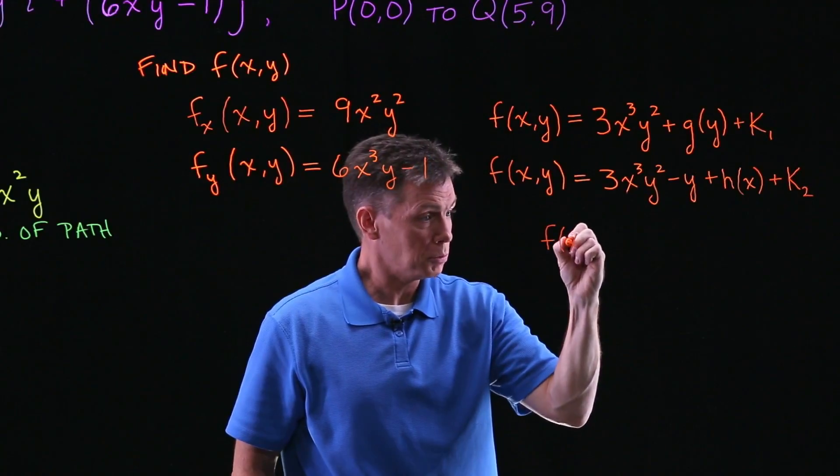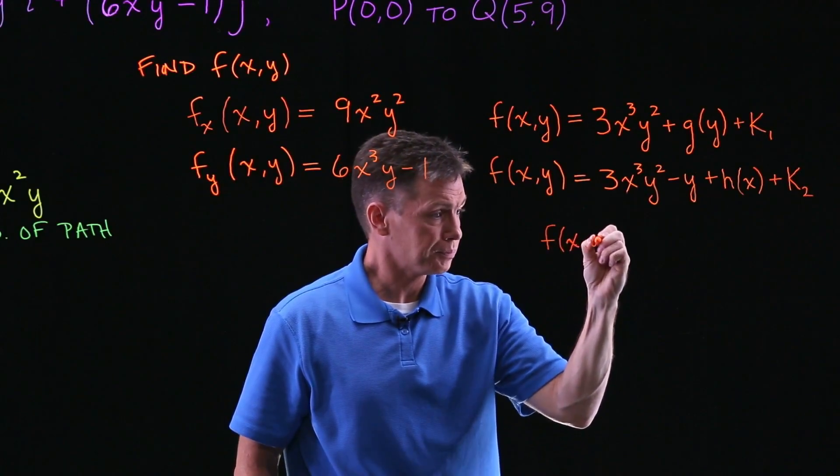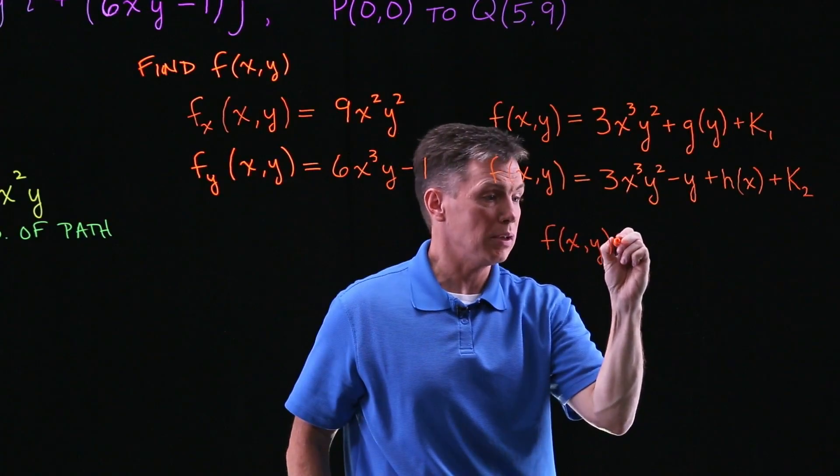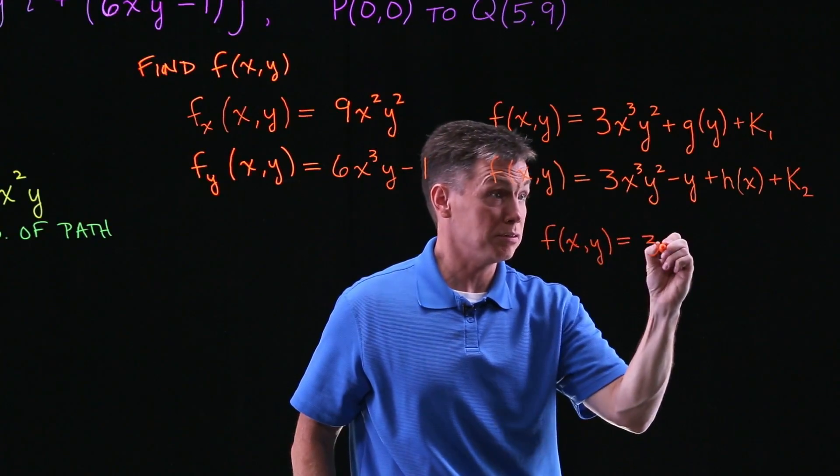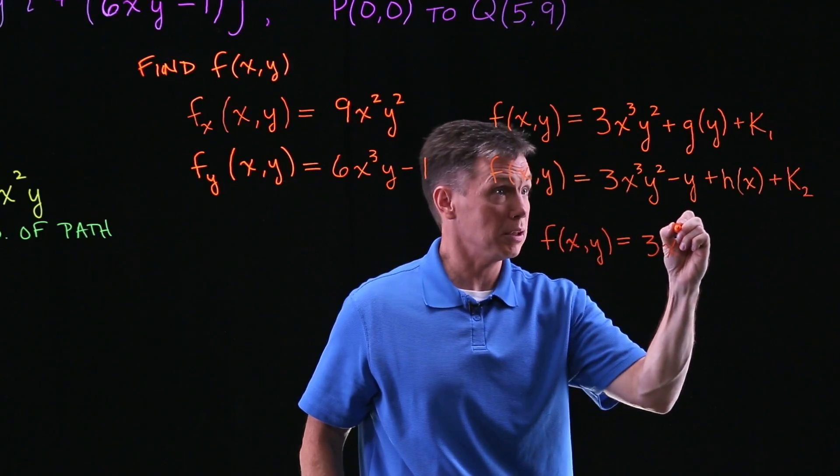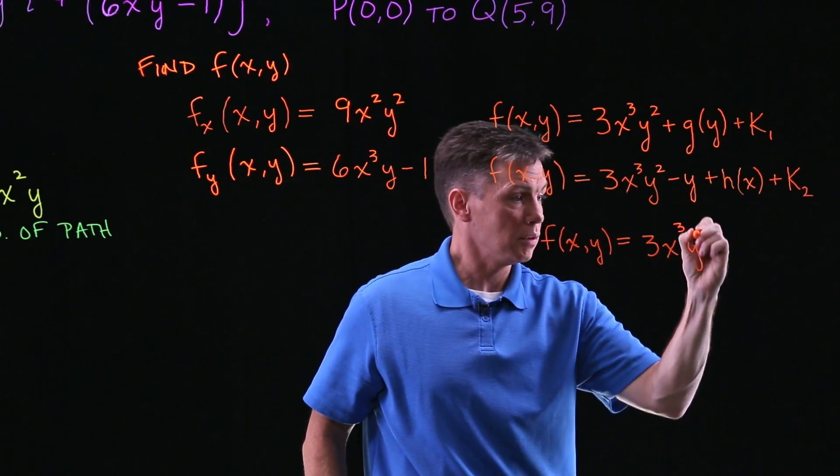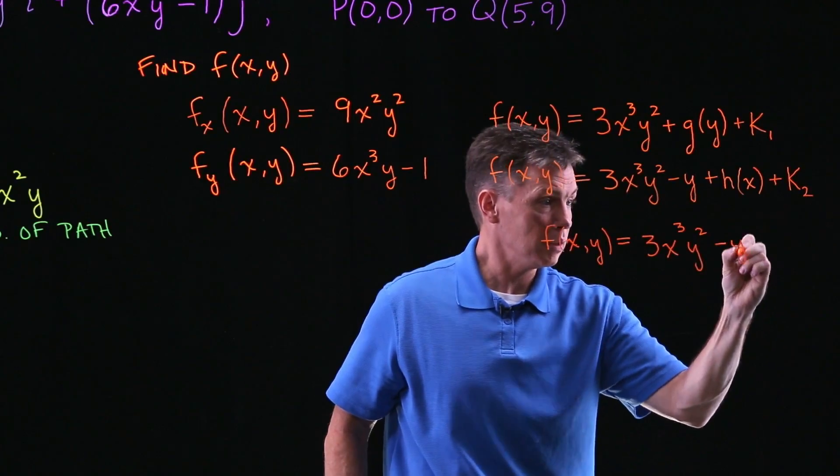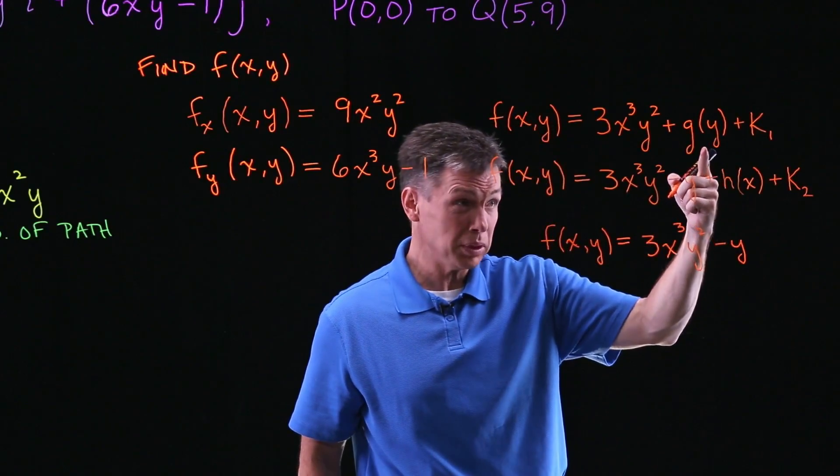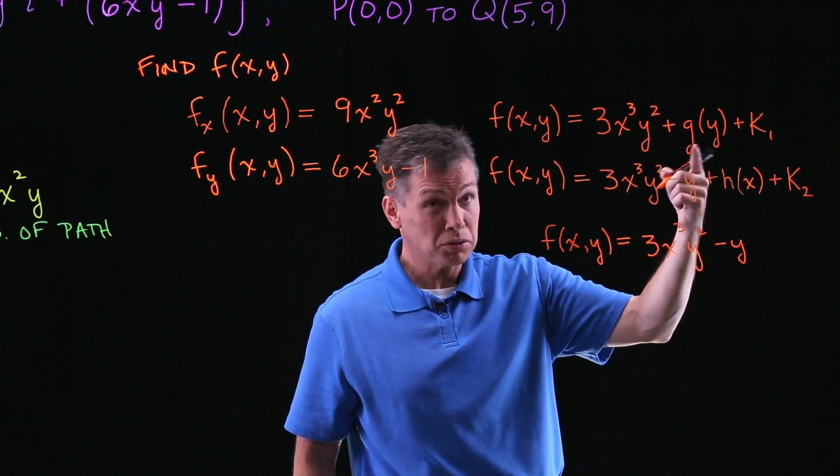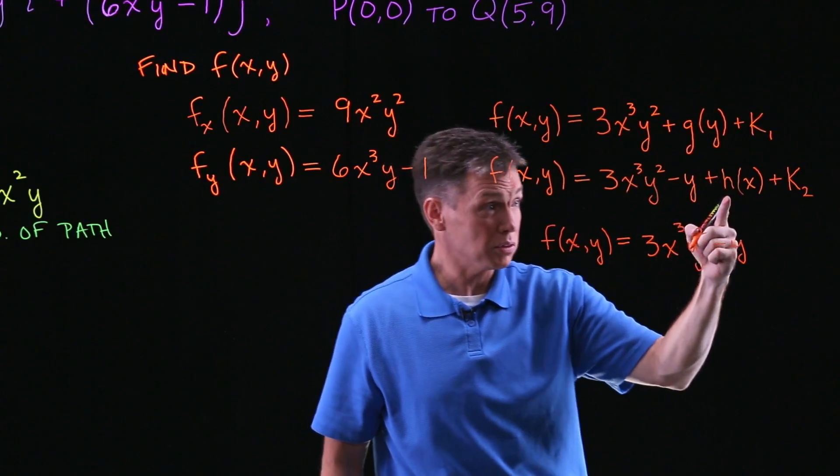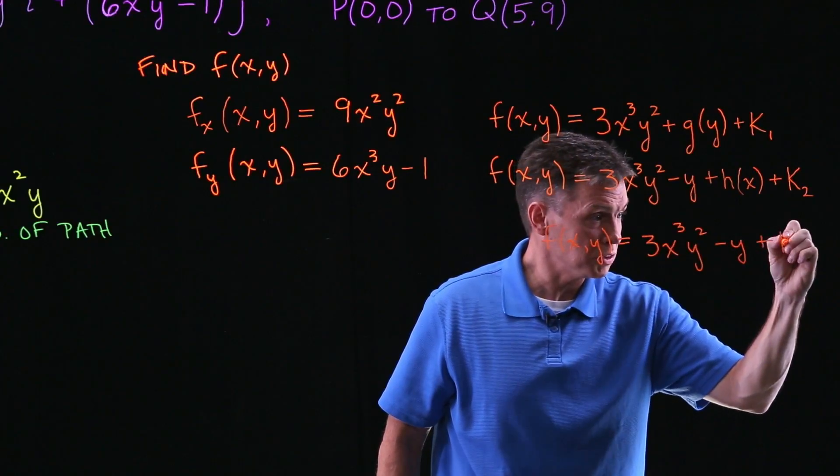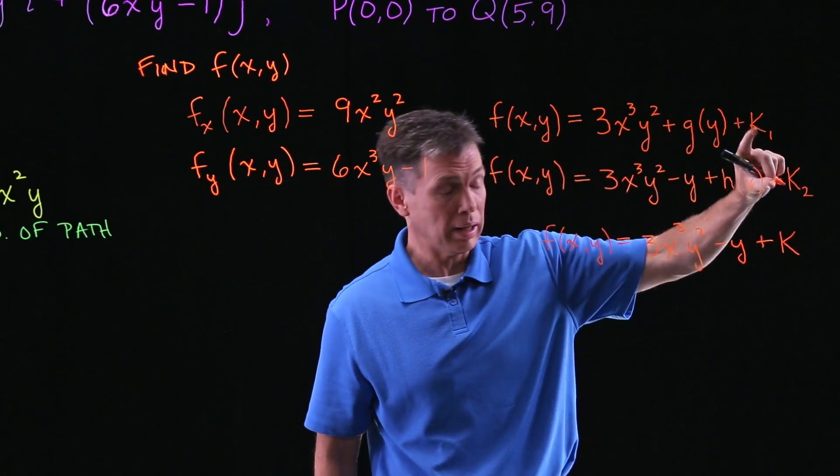The similarities between these two are obviously the 3X³Y², so that's got to be in there in our final expression. f of X, the minus Y has to be there, and that must be what was the g of Y up here. There's nothing up here that showed up with just X so there's nothing there, and there'd be some kind of constant which we usually just drop the subscript then and collapse the k1 k2 together.